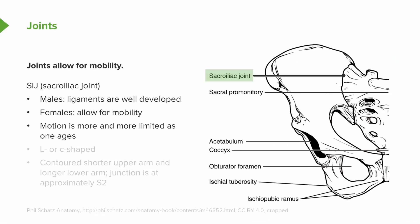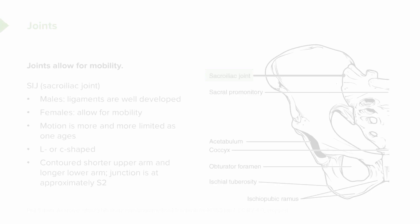The motion in general becomes more and more limited as one ages. The SI joint is usually L or C shaped, contoured with a shorter upper arm and a longer lower arm. The main axis of the junction between the sacrum and the pelvis lies at S2.